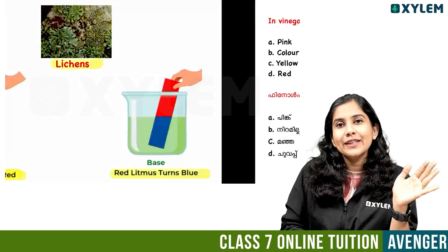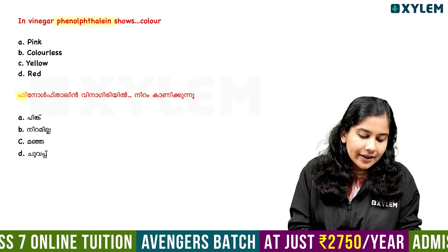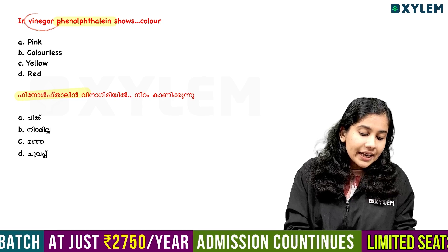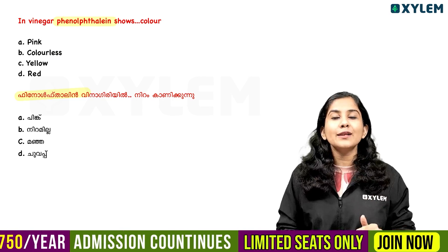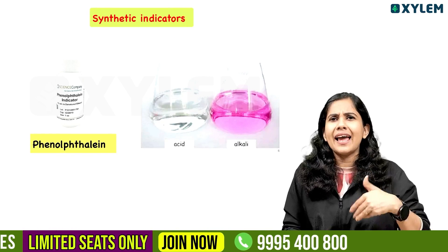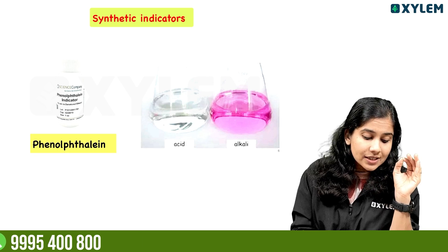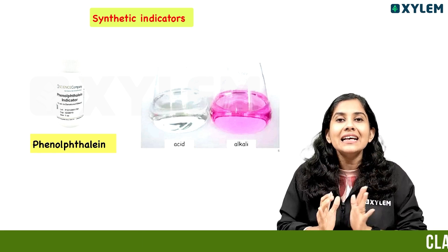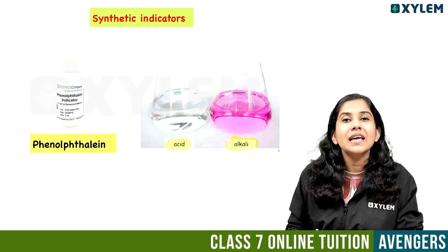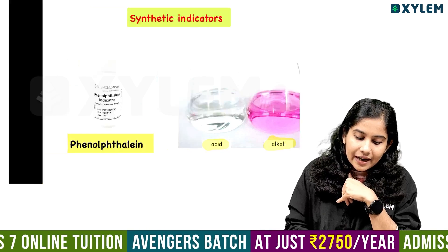The next question: vinegar with phenolphthalein shows which color? Phenolphthalein is a synthetic indicator. In acid, phenolphthalein is colorless. In base, phenolphthalein turns pink.